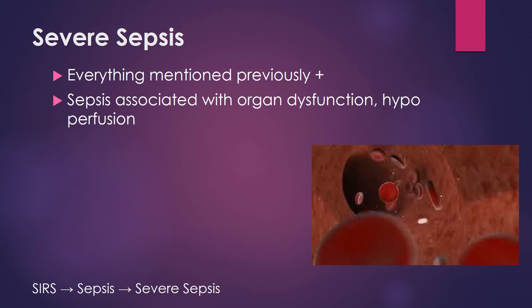After sepsis comes severe sepsis, and basically you're just building on at this point. It's everything mentioned previously, plus sepsis associated with organ dysfunction or hypoperfusion to an organ. Basically, now there's a specific organ in the body that is being affected by the sepsis.